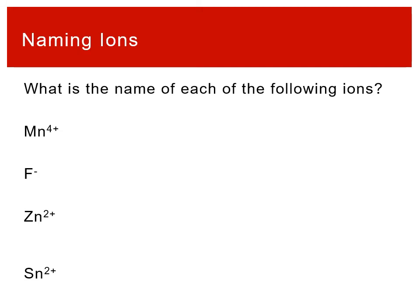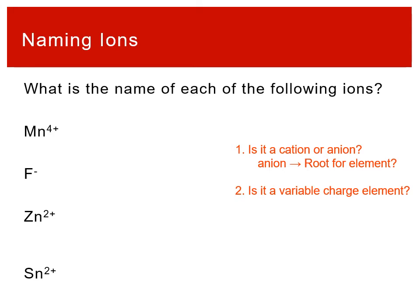Let's get some practice naming ions. When naming ions, we always want to start with: is it a cation or is it an anion? Because that determines how I proceed through the naming — do I keep the name, do I change the ending? If it is an anion, I need to figure out the root so I can change the ending. Is it a variable charge? This would only apply if it's a cation. Does it need a number, and what should that number be?